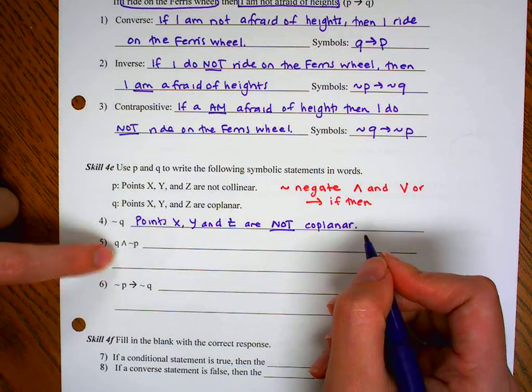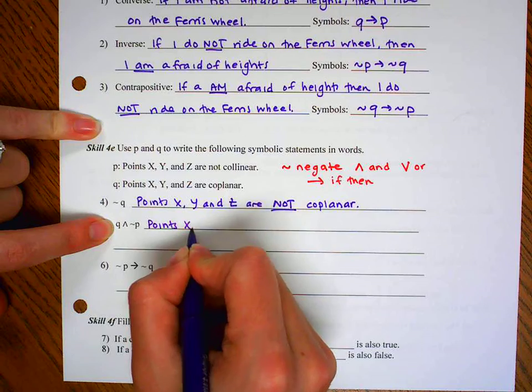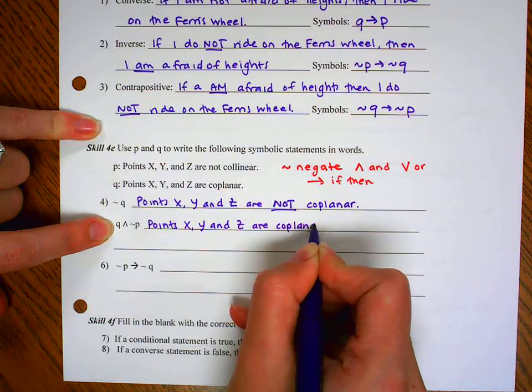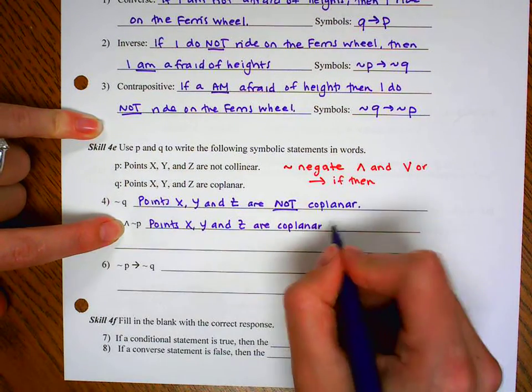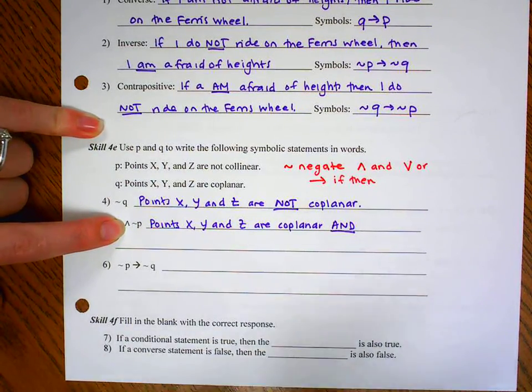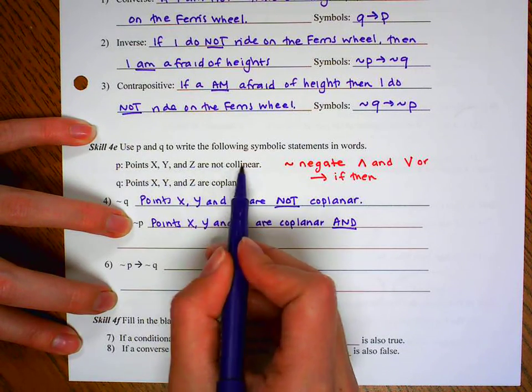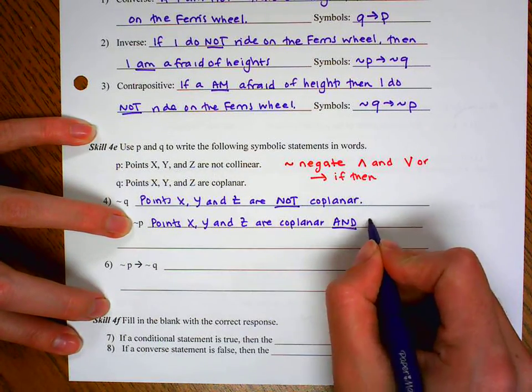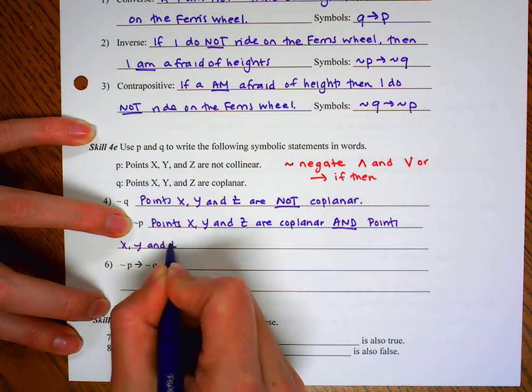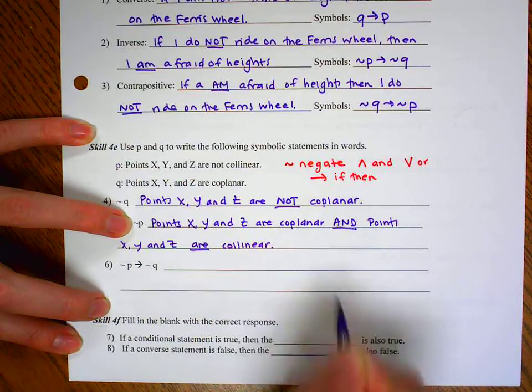Here there's no arrow, so we're not going to do any if then. We're just going to start with Q, which is that points X, Y, and Z are coplanar. Now we're going to do this symbol, which is and. I'm just capitalizing the words that I want to stick out so you've seen them, but you don't have to do that. Now we need the negation of P. So instead of saying that they are not colinear, we're going to say they are coplanar. So and points X, Y, and Z are coplanar.